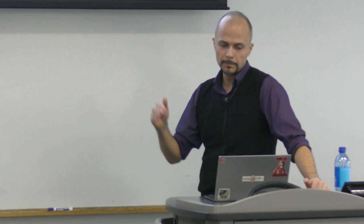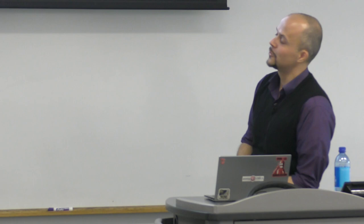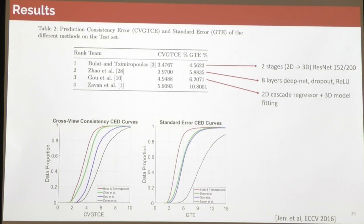Eight teams submitted results; I report the first four. The first two are deep learning methods; the third is a cascade regressor. Their performances are very similar — one unit in ground-truth consistency means one pixel error across all landmarks. However, cascade regressors can operate much faster than deep learning methods. The takeaway: deep CNN wins in precision, but cascade regressor wins in speed — operating over 1,000 frames per second while achieving nearly the same alignment result.